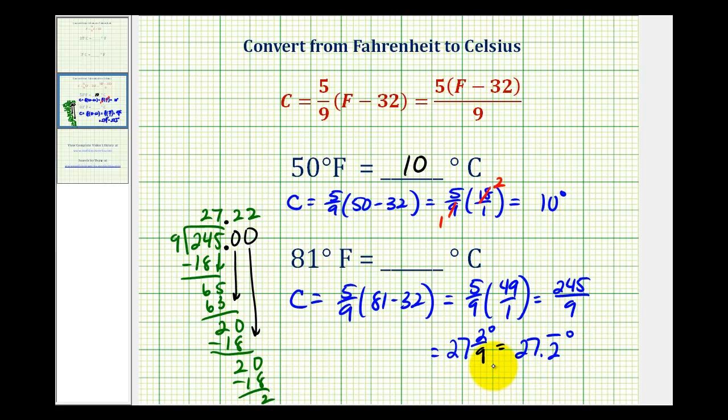So on this type of problem, it's important that we read the directions carefully. It may say around to the nearest degree or nearest tenth of a degree. Let's go ahead and round this to the nearest tenth. So this is approximately 27.2 degrees Celsius. I hope you found these examples helpful.